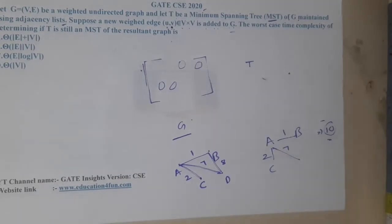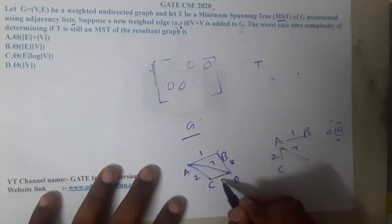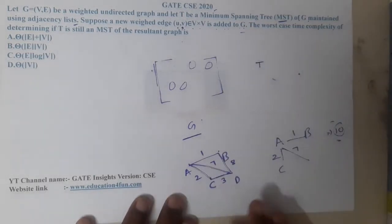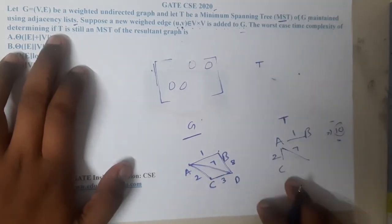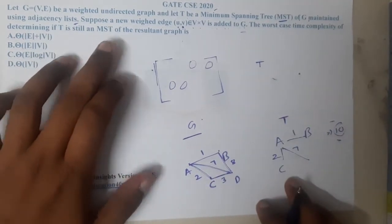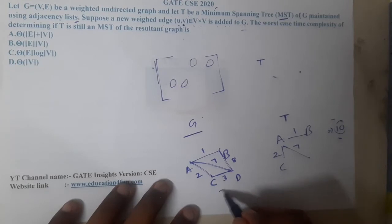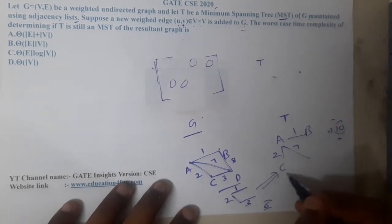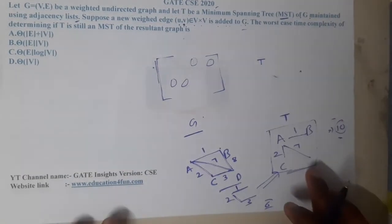Now suppose we add one new edge with a lower cost. We need to check whether T is still the minimum spanning tree of the resulting graph. For the new graph, the minimum spanning tree would have a cost of 6, not 10. So we need to determine how long it takes to verify this.